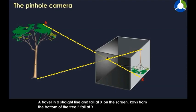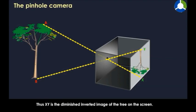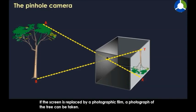Rays from the bottom of the tree, B, fall at Y. Thus, XY is the diminished inverted image of the tree on the screen. If the hole is larger than a pinhole, the image obtained will be blurred.